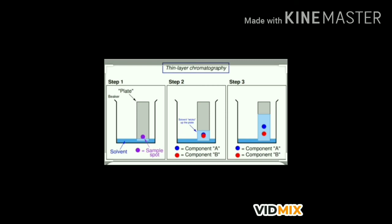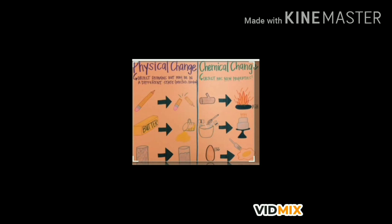This process of separation of components is called chromatography. The name comes from the Greek word 'chroma' meaning color, because this technique was first used for the separation of colors. Chromatography is used for the separation of solutes that dissolve in the same solvent and to identify unknown substances. With advancement of technology, newer techniques of chromatography have been developed. Main applications include separating colors in a dye, pigments from natural colors, amino acids, sugar from urine samples, and drugs from blood.